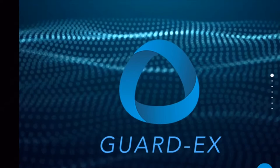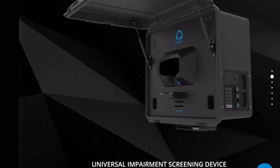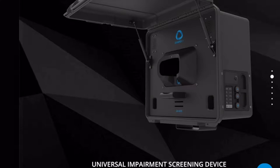GuardX is a company that is developing a universal impairment screening device, including cannabis impairment. This device cancels human error and applies machine learning to analyze an individual's physiological signs.